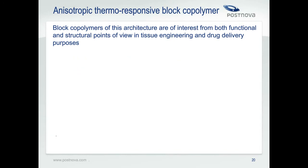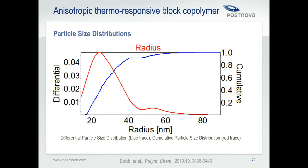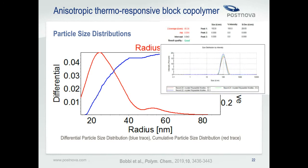Batch DLS measurements showed an average hydrodynamic size of about 103 nanometers, which works well as a screening tool but doesn't tell you anything about the presence of minor species or shape effects. The same sample was analyzed by AF4 with MALS and DLS as inline detectors. The red dots plotted across the peak represent the radius of gyration calculated at each time point by taking into account the intensity of scattered laser light at 21 different angles. There's a subtle shoulder on the later-eluting right side of the peak, and the slope of Rg changes to become steeper here. Using MALS data to develop differential and cumulative size distributions, most of the particles are smaller than about 45 nanometers in radius, but there's a small but clearly defined second population of about 45 to 70 nanometers in radius.